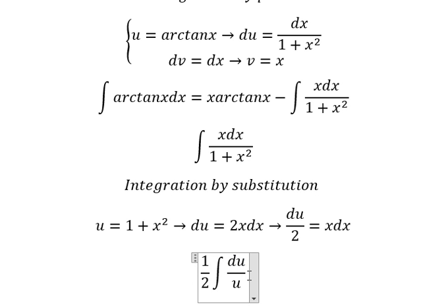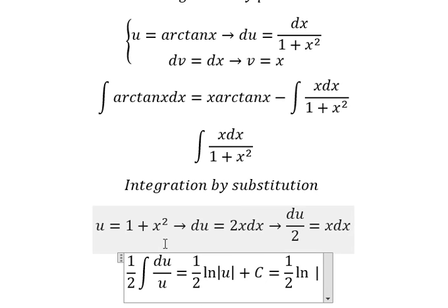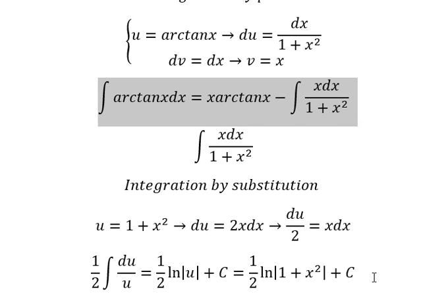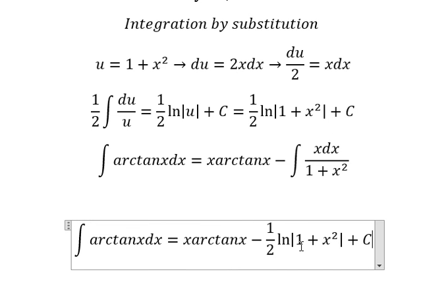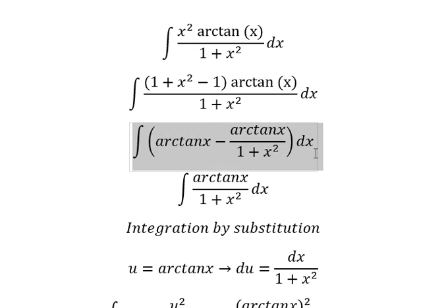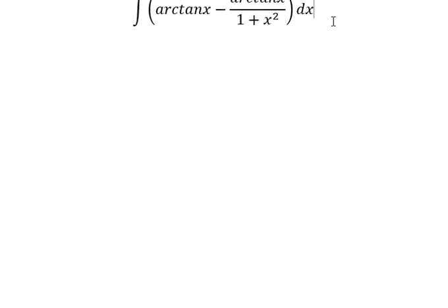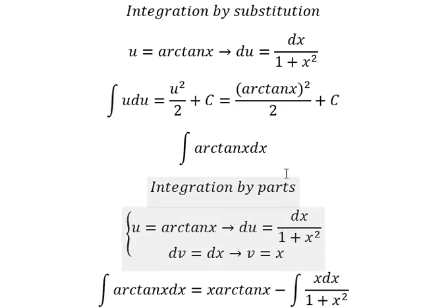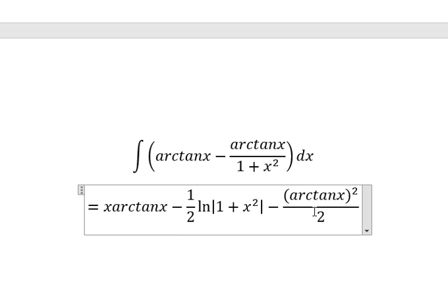The integration of this gives us ln of the absolute value of u, plus the constant c. Substituting back, u is one plus x squared. Going back to the full expression, the integration of x·arctan(x) equals x·arctan(x) minus one half ln|1 + x²|, and we add the constant c.